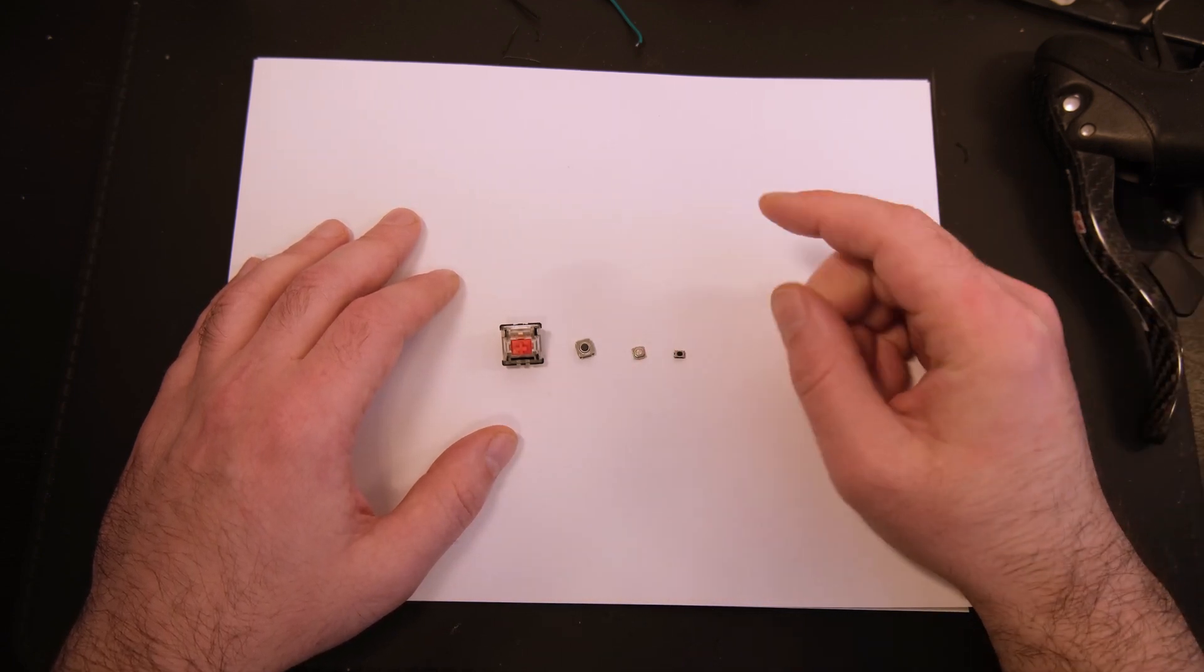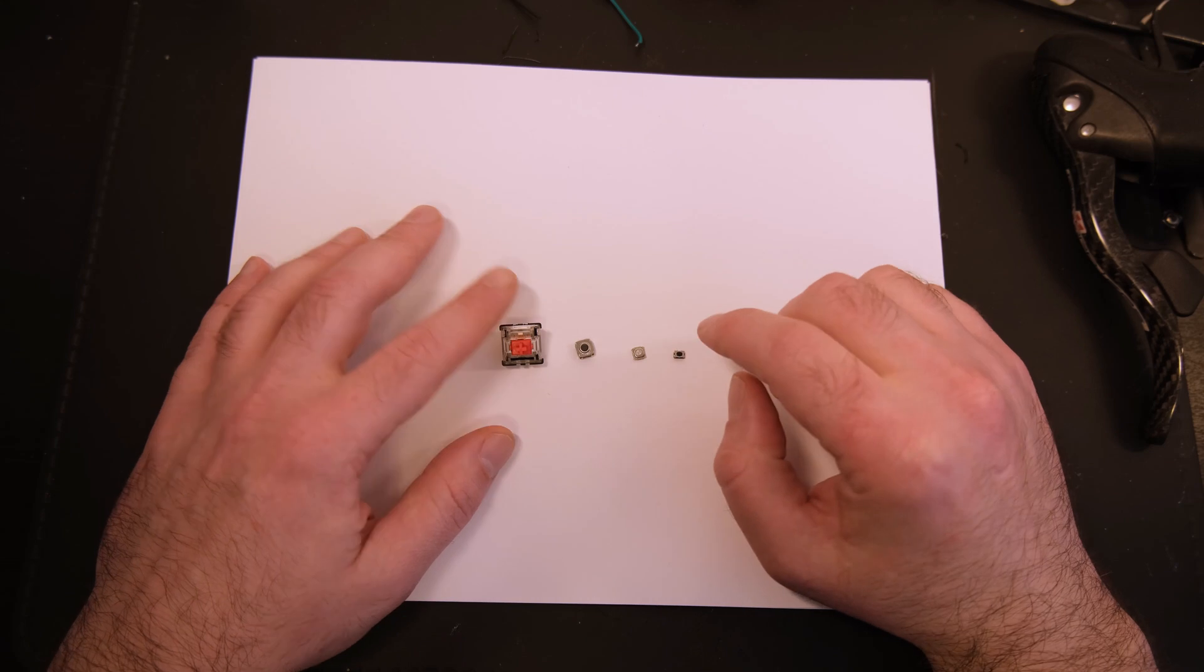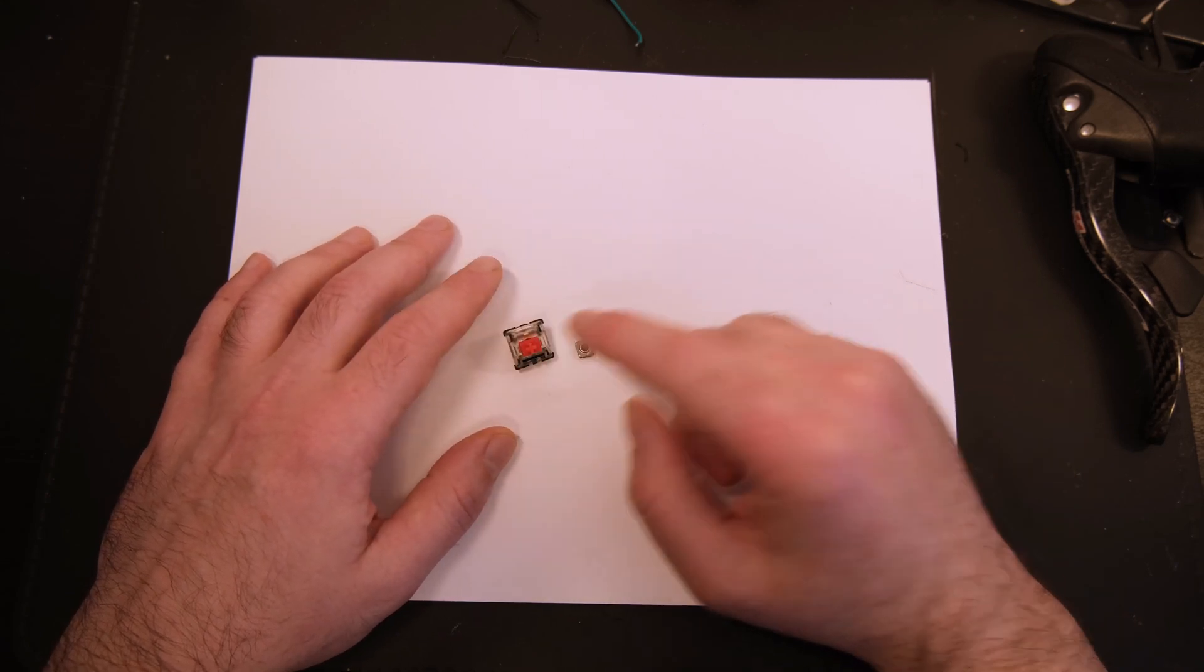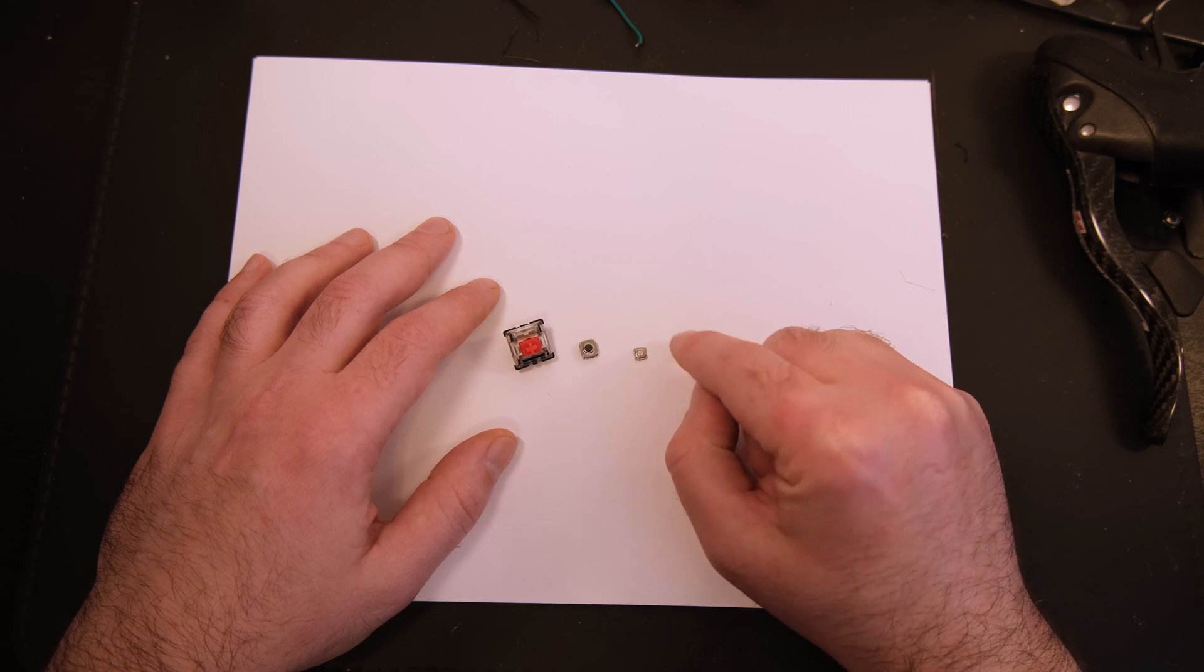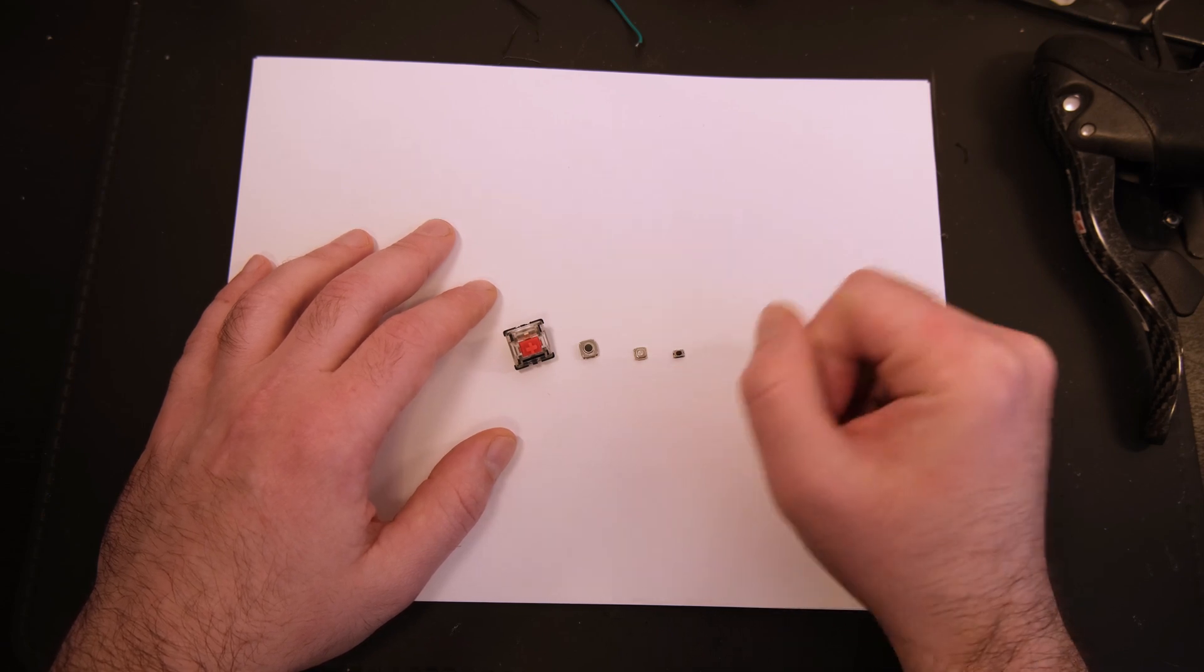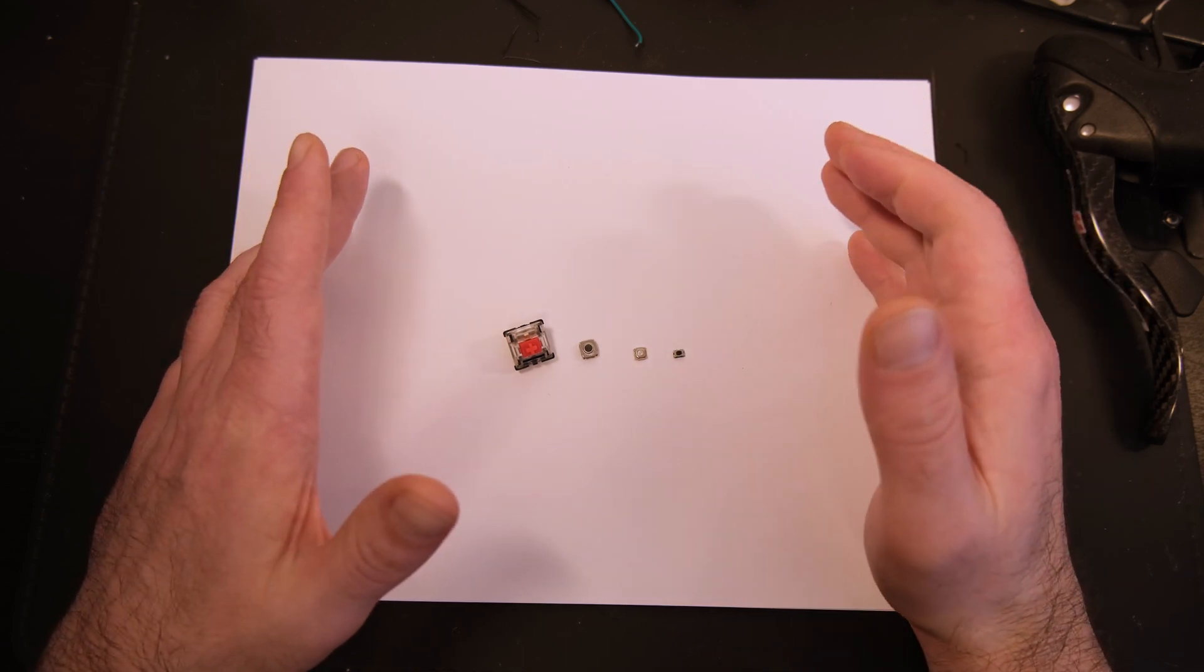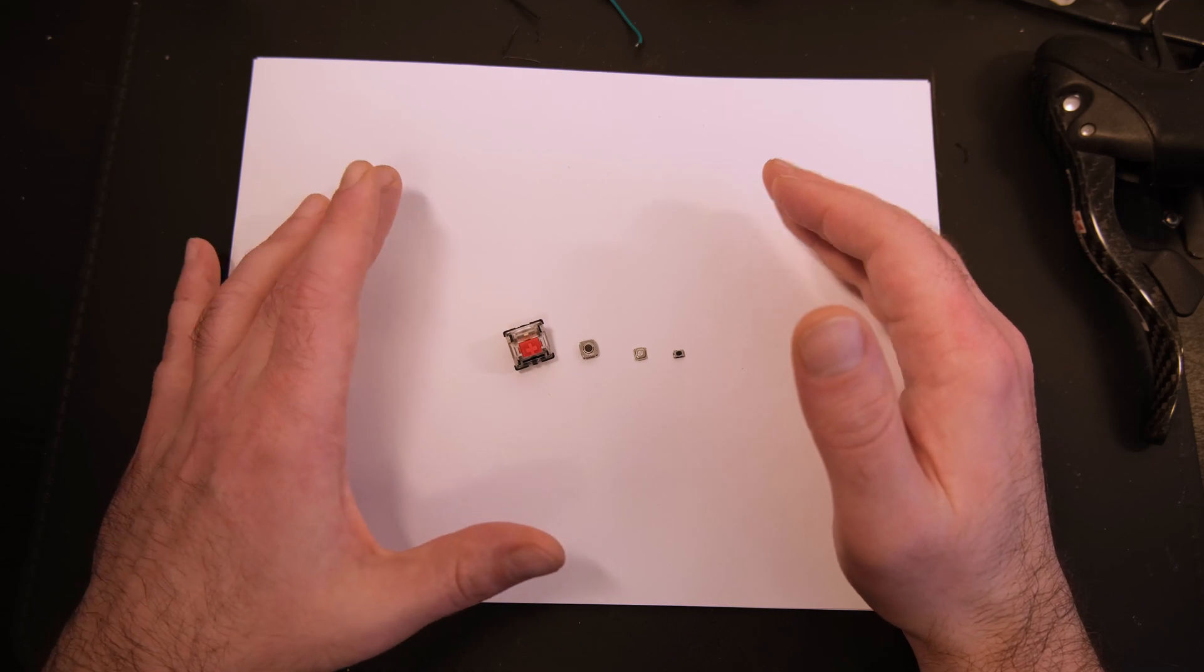What I mean by that is switches. This is a Cherry MX Red computer key switch. These are what are called tact switches, tactile switches. It's a little itty-bitty one. And it all kind of revolves around the feel.